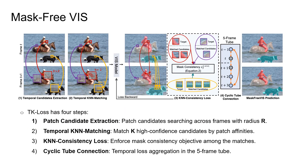The Temporal KNN Patch Loss has four steps. First, patch candidate extraction: patch candidates are searched across frames with radius R. Second, temporal KNN matching: K high-confidence candidates are matched by patch affinities. Third, consistency loss: a mask consistency objective is enforced among the matches. Fourth, cyclic tube connection: temporal loss aggregation in the five-frame tube.